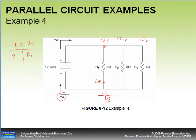Branch one: 12 divided by 8 = 1.5 amps. Branch two: 12 divided by 8 = 1.5 amps. Branch three: 12 divided by 4 = 3 amps. Adding them: 1.5 + 1.5 = 3, and 3 + 3 = 6 amps total.